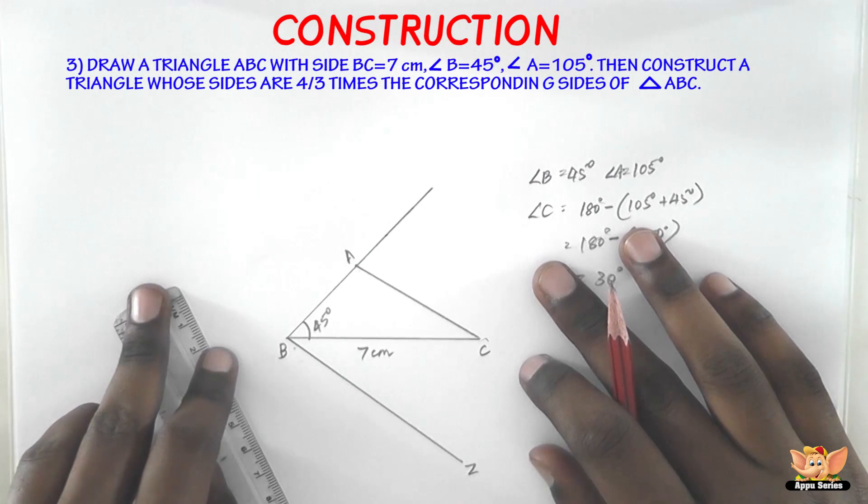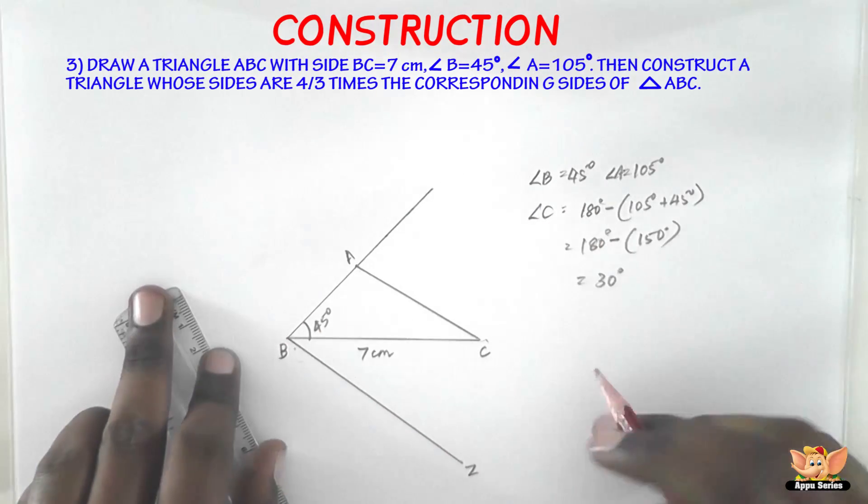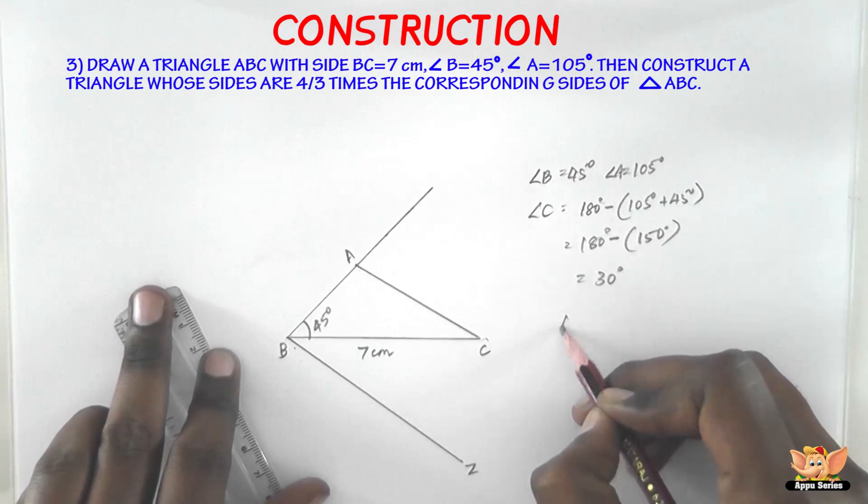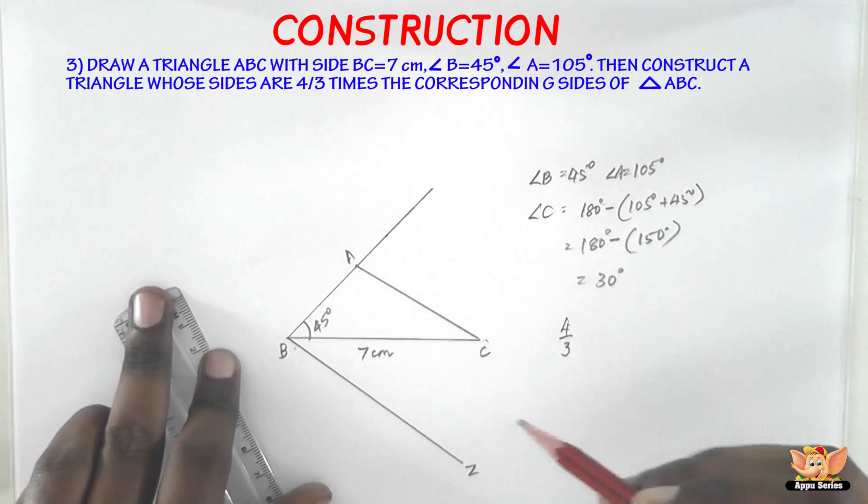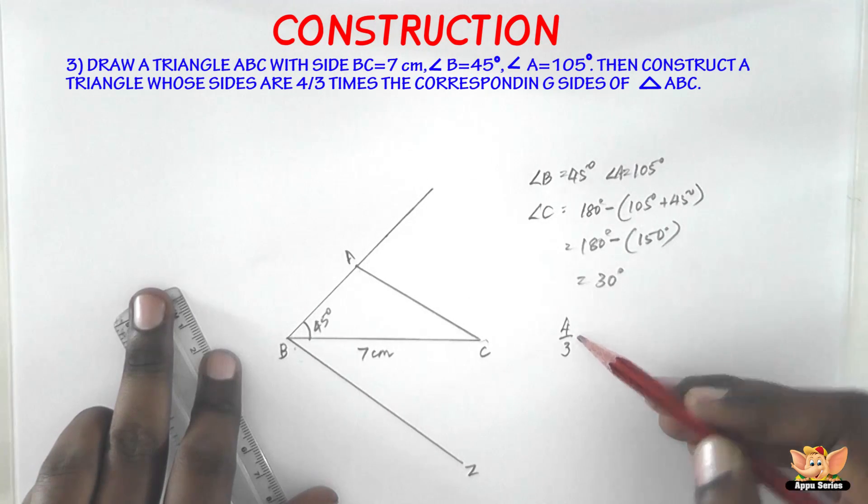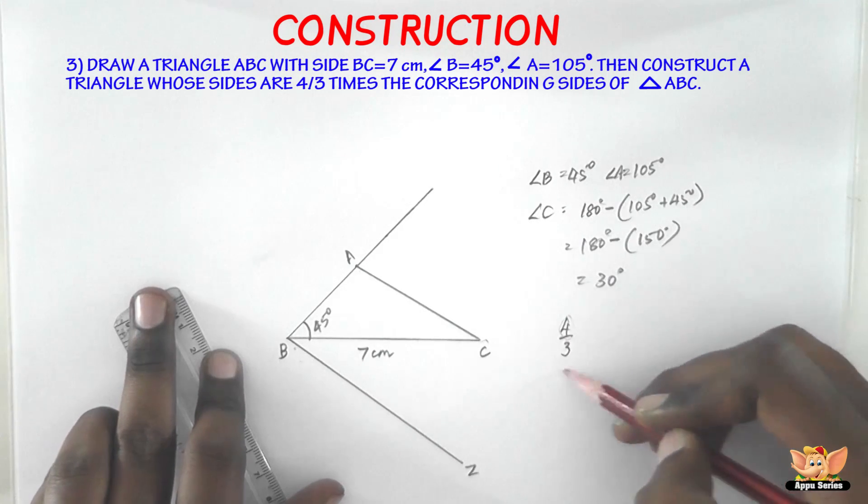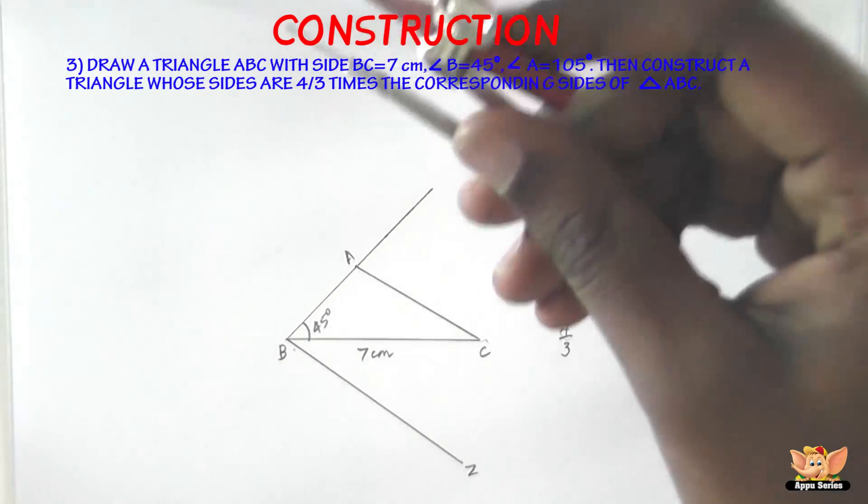And the next step is we need to mark off 4 points on BZ, because the fraction is 4 by 3 here. The triangle that we're going to construct is going to be 4 by 3 times the triangle that we've constructed here. So it's greater. So also take the greater number of these two which is 4.